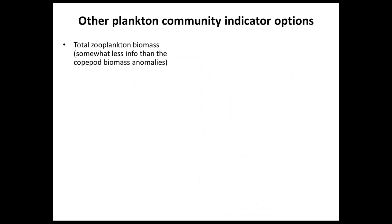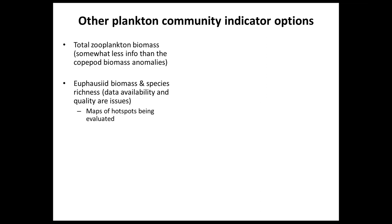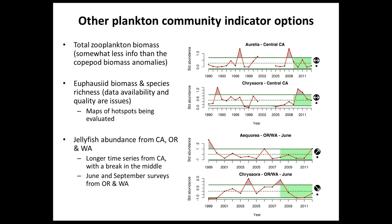Other possible plankton community indicators include total zooplankton biomass, though somewhat less informative than copepod biomass anomalies. Work is underway tracking biomass, distribution, and species richness of euphausiids, with data hopefully available soon. There are also some numbers on jellyfish abundance off California, Oregon, and Washington from juvenile rockfish surveys conducted for quite a long time, showing quite variable data with a break in the time series off California — these seasonal data tell us about abundance and variability of species with very different ecosystem functions than copepods.